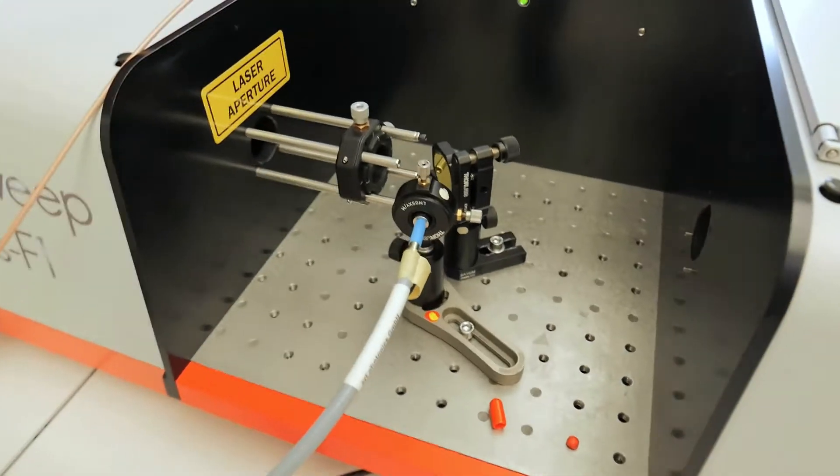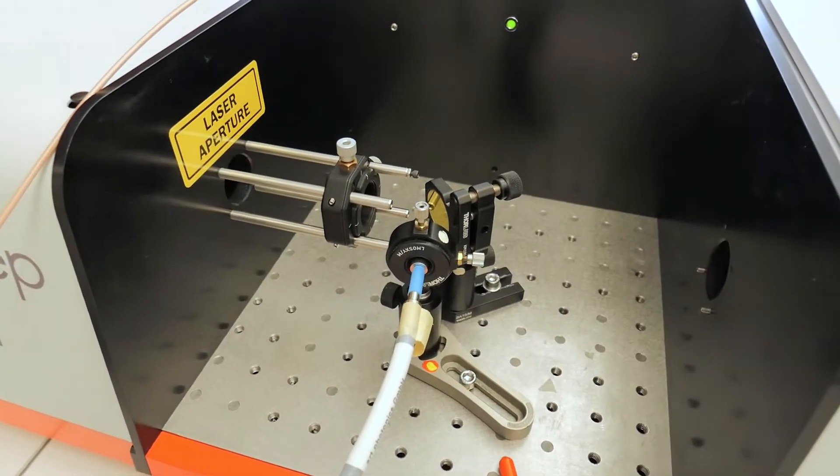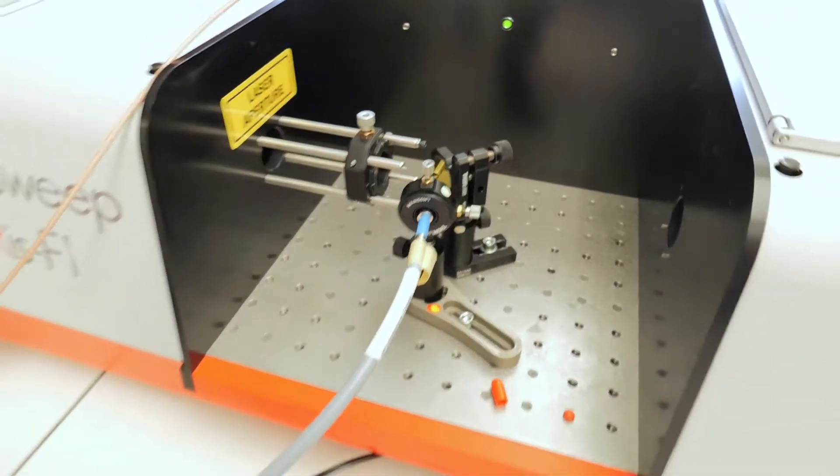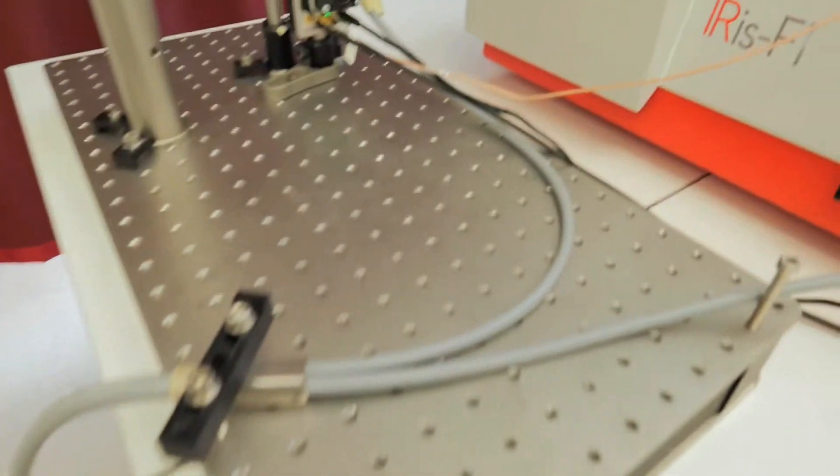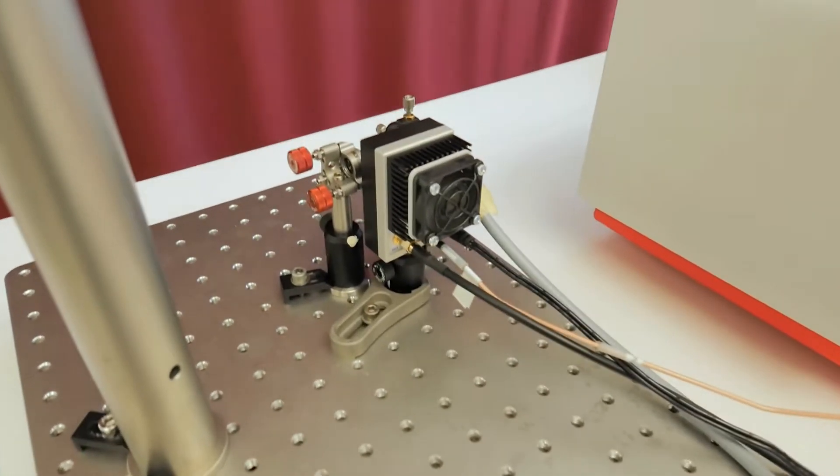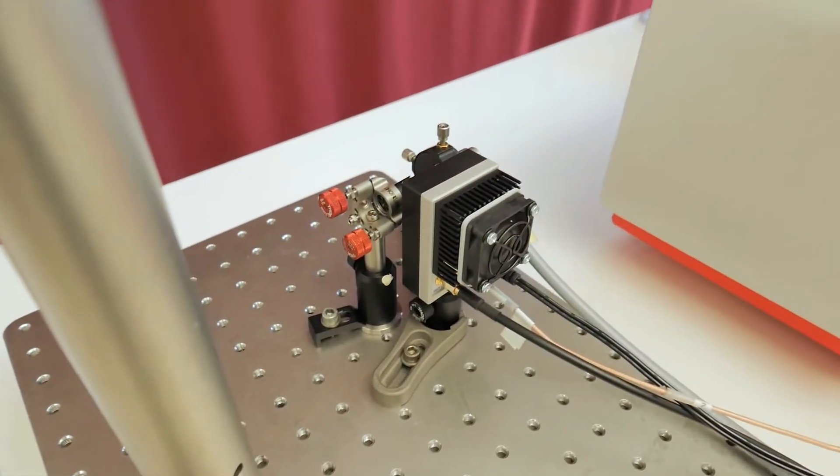So here's an in-coupling setup where we have a lens and a mirror, so rather simple. Then the fiber disappears off into the distance and it comes back to an external detector where we have an out-coupling setup.